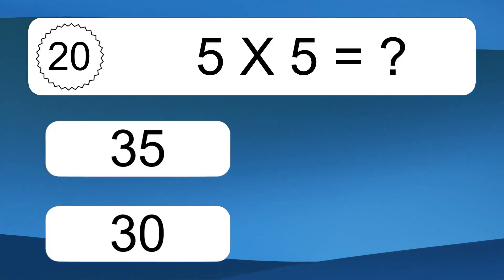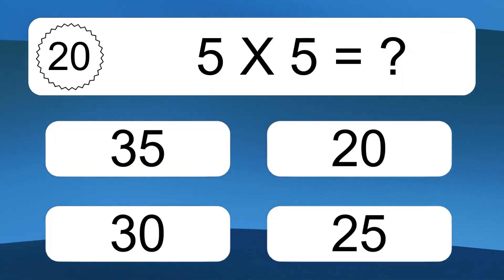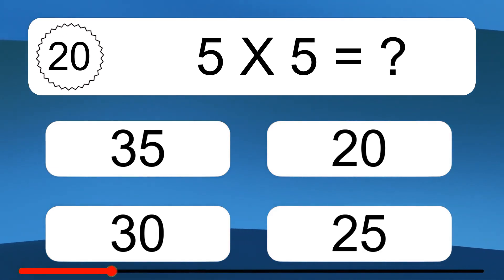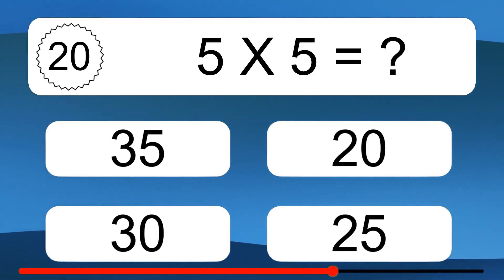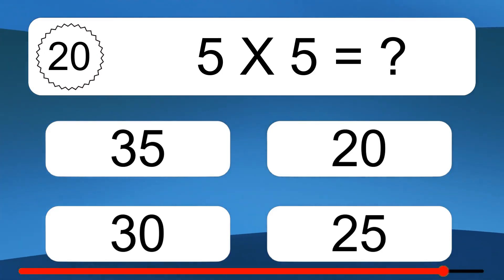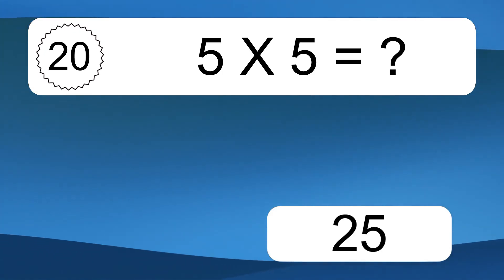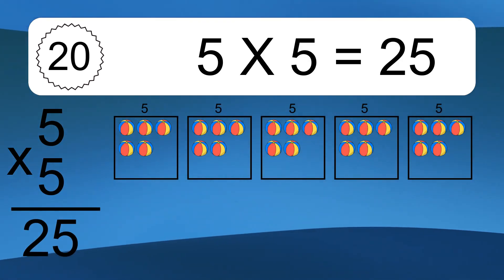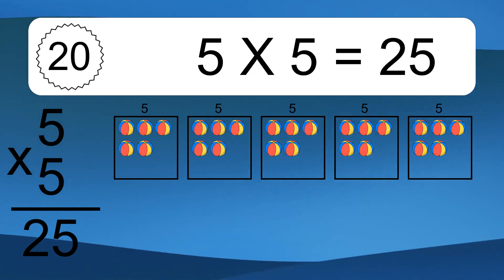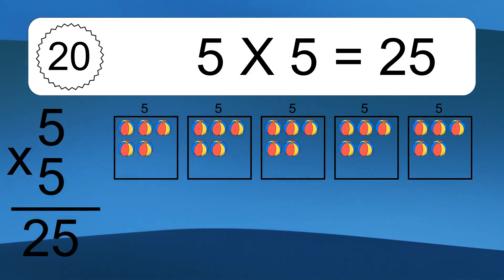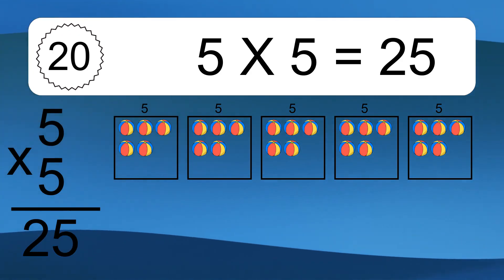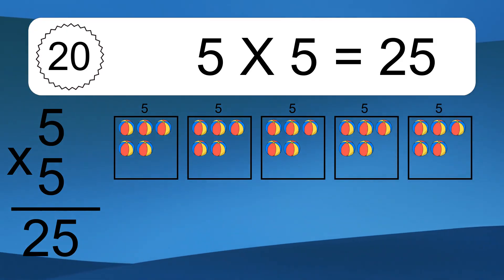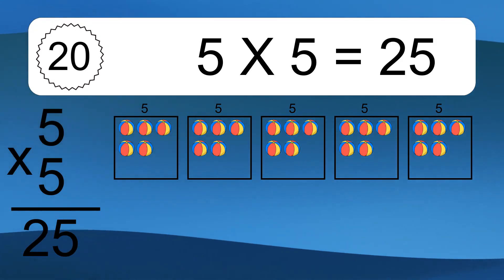5 times 5 equals what? 5 times 5 equals 25. We have 5 boxes, and each box has 5 colorful balls inside. If you count all the balls in all the boxes together, you will have 5 times 5 balls. This equals 25 balls.